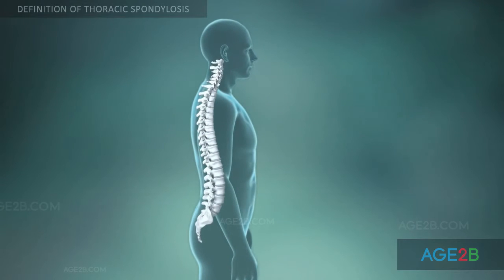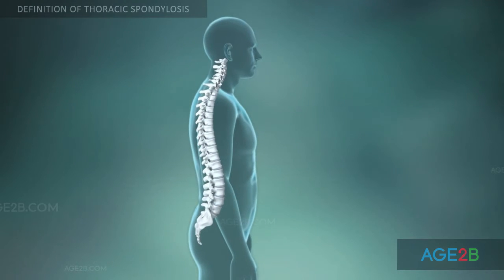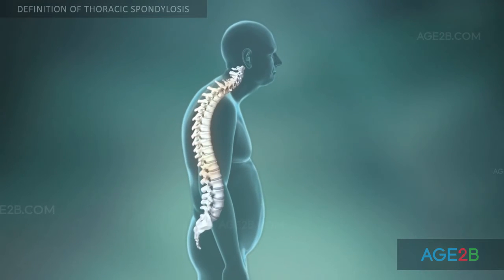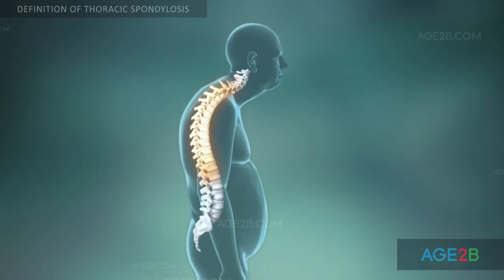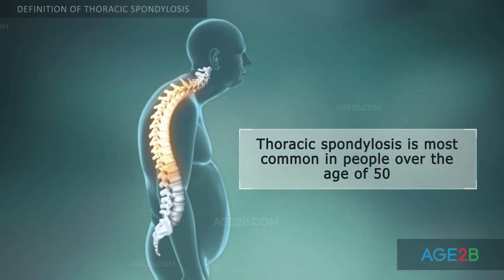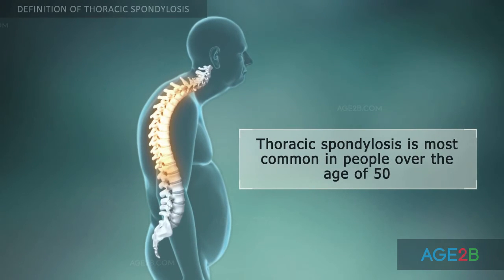Thoracic spondylosis does not occur as often as cervical or lumbar spondylosis. Commonly, it happens in people over the age of 50.